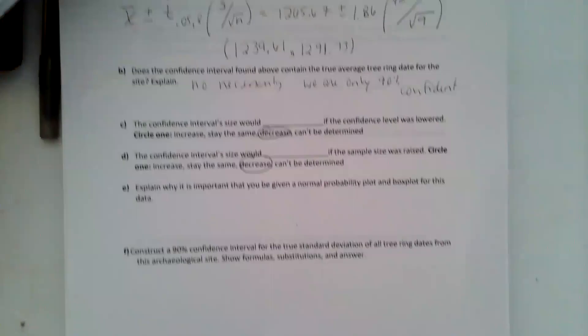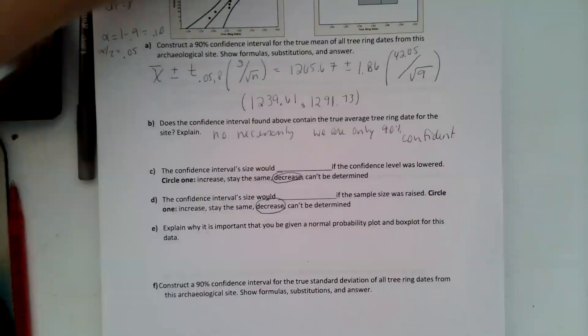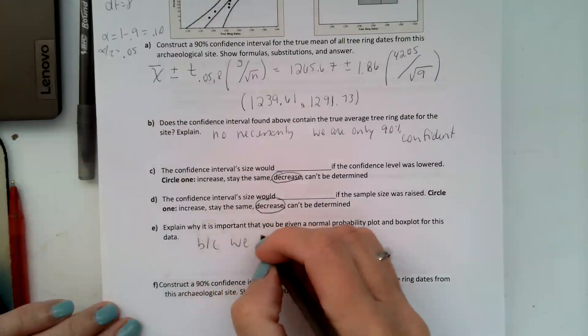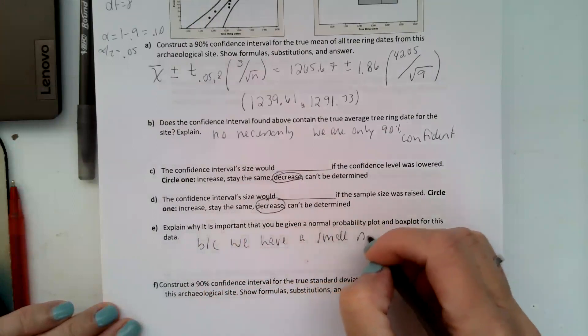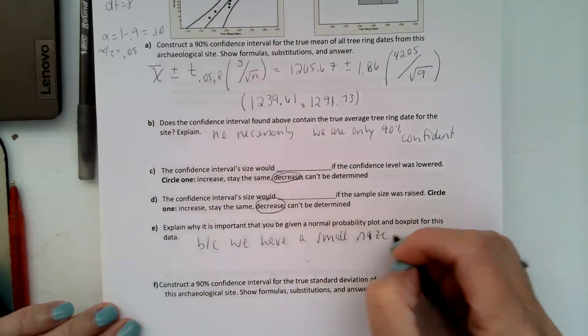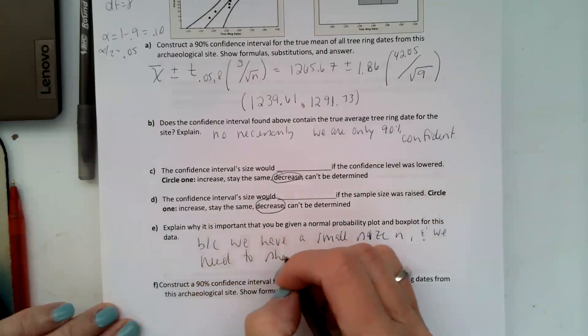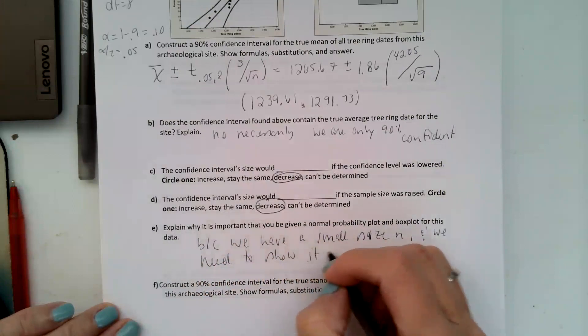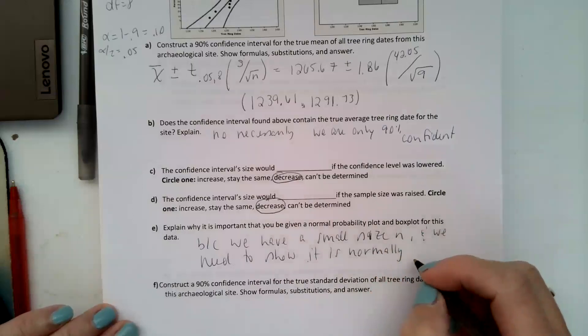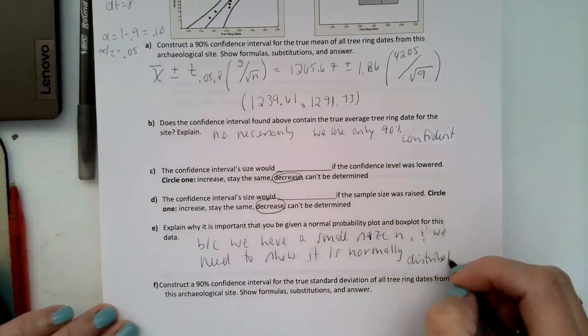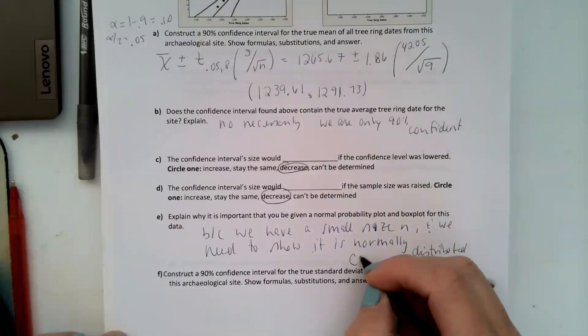Letter E says it is important that you be given a normal probability plot and box plot for this data. And that's because we have a small sample size and we need to show it is normally distributed. And that's so we can use our central limit theorem.